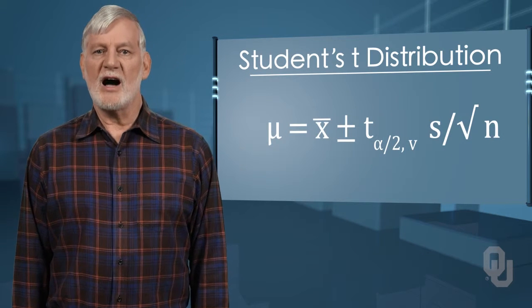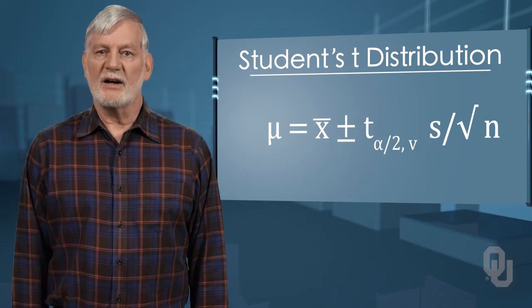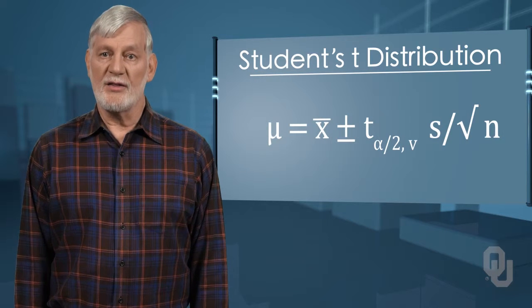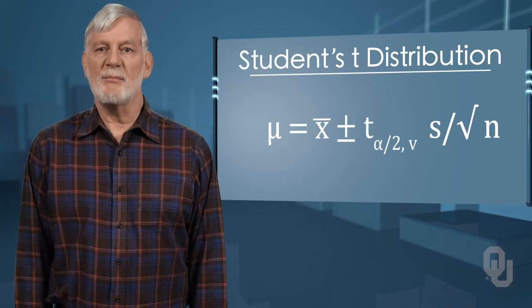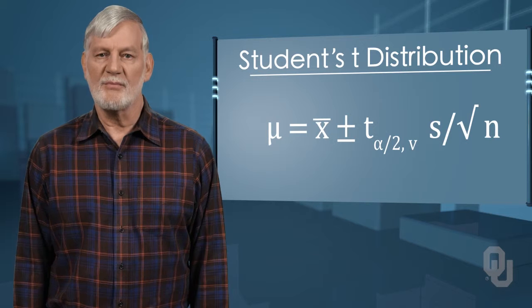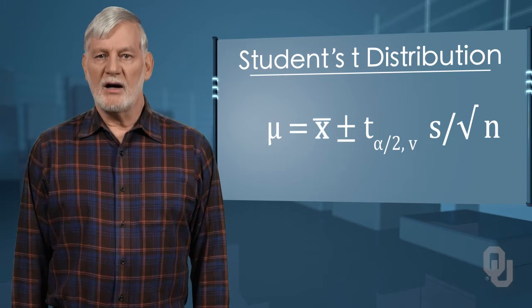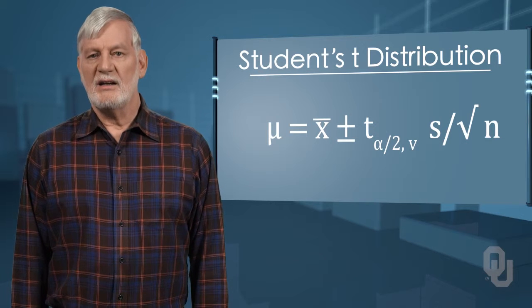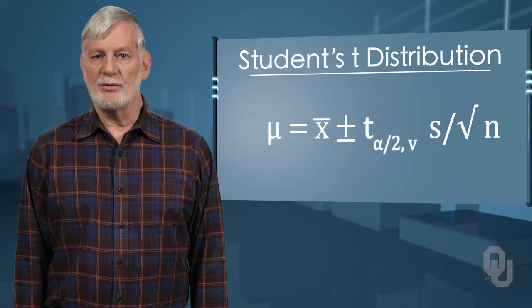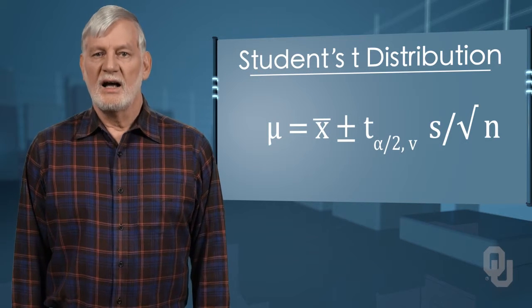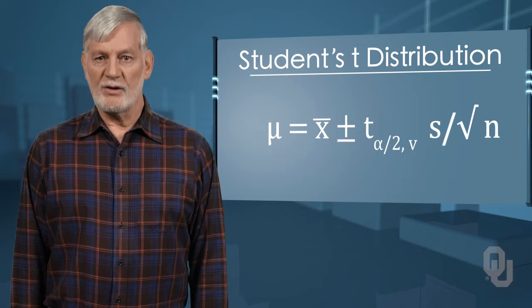Restating the formula for a confidence interval for the mean for cases when the sample size is smaller than 30 and we do not know the population standard deviation sigma, we get μ equals x̄, plus or minus, t sub α over 2, ν, times s over the square root of n.